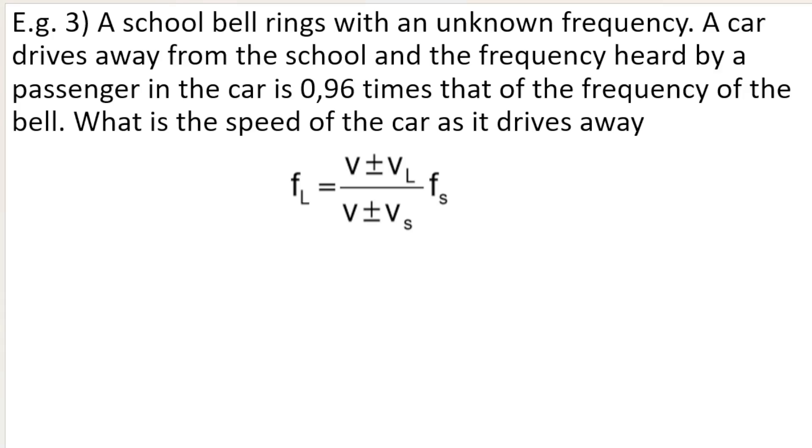Let's look at what we have. We know that the school bell is the source. The school bell rings with an unknown frequency. So we don't know the frequency of the source. A car drives away from the school and the frequency heard by a passenger in the car is 0.96 times that of the frequency of the bell. So we don't actually know the frequency observed by the listener, but we know that it's 0.96 times that of the frequency of the bell, the frequency of the source. So technically I don't know what that is either. What is the speed of the car as it drives away? So we're looking for velocity of the listener.